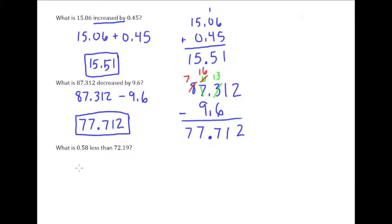And finally, what is 0.58 less than 72.19? Well, remember this less than is one of those where, in order to take less than something, that something needs to be there first. So 72.19 goes first, and then we're taking away 0.58.